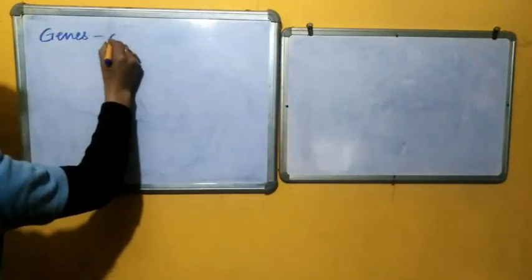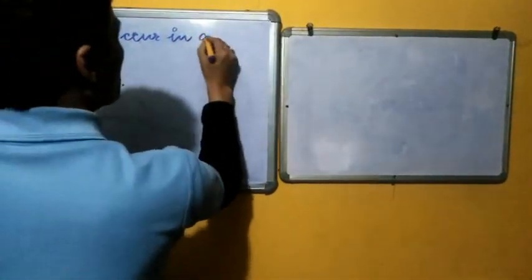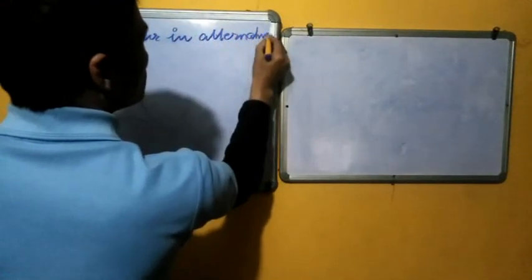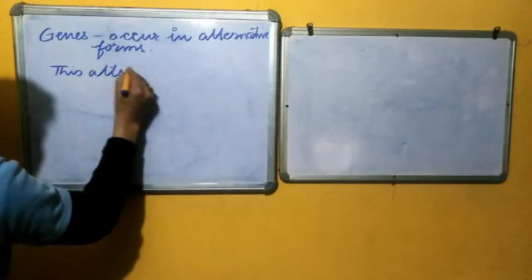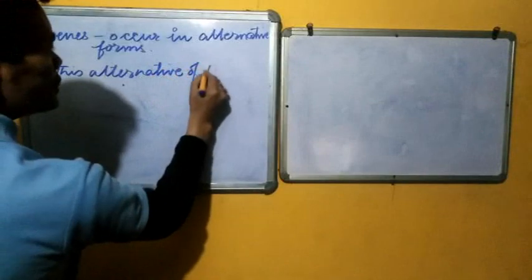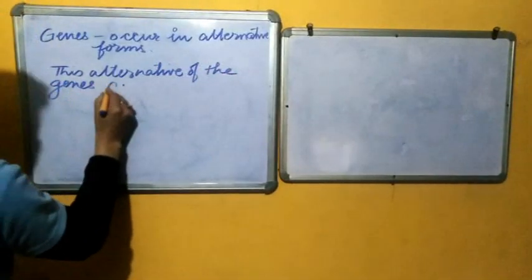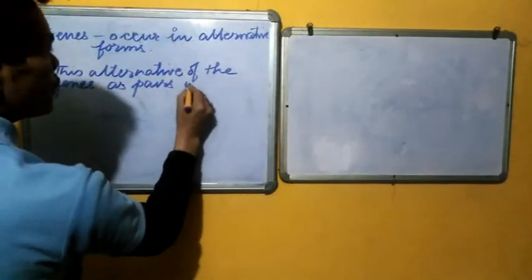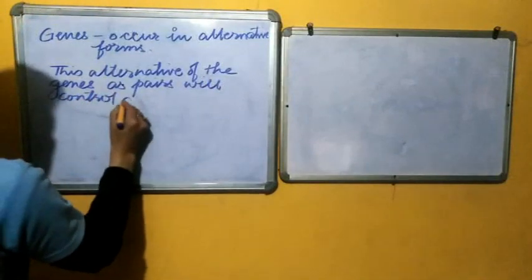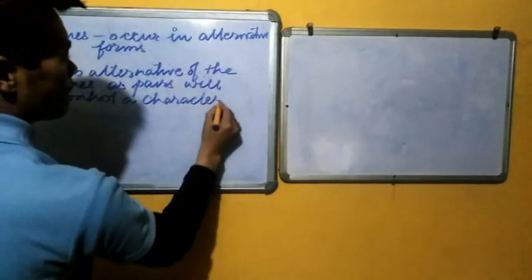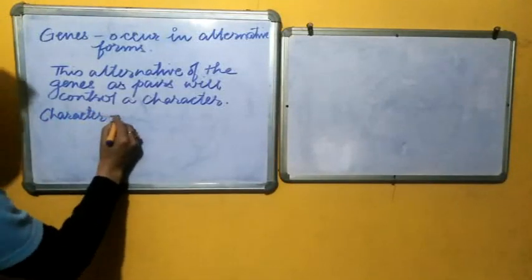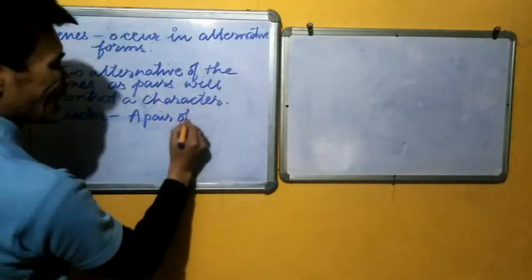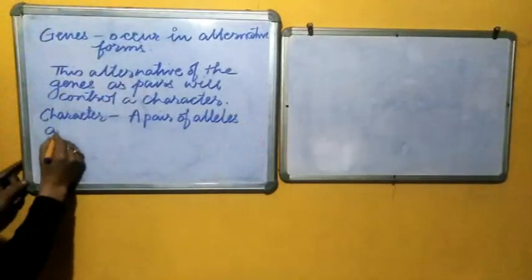By now we know that genes occur in alternative forms. These alternative forms of the genes as pairs will control a character. Which means, for a character, a pair of alleles are required.